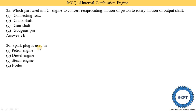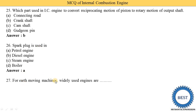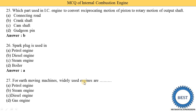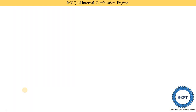Next MCQ: a spark plug is used in — option A: petrol engine, option B: diesel engine, option C: steam engine, option D: boiler. The spark plug is used in a petrol engine, so option A is correct. For earth-moving machines such as JCBs and cranes, diesel engines are used, so option C is the correct answer for that MCQ.